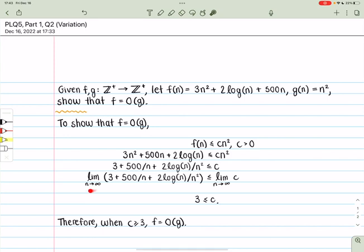Take the limit as n approaches infinity and we'll find an upper bound here for c where the c has to be greater or equal to 3. Once c is greater or equal to 3 then f is big O of g.